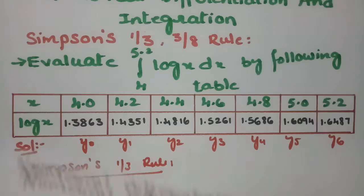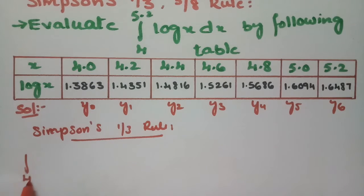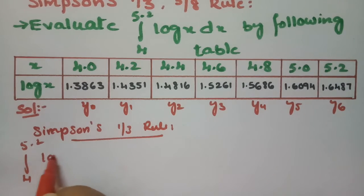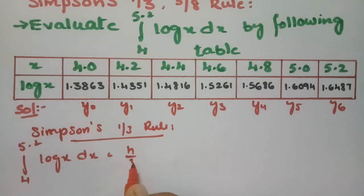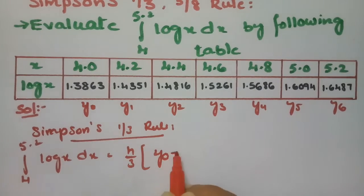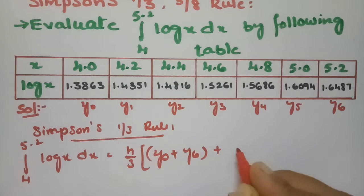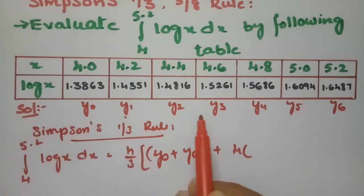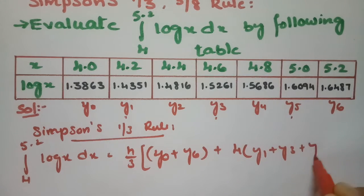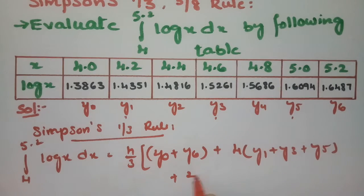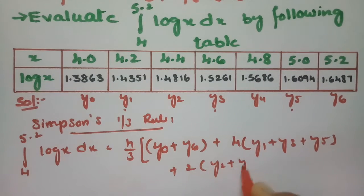Now we are going to apply these formulas. The integral from 4 to 5.2 of log x dx equals h/3 times [first ordinate plus last ordinate, plus 4 times all the odd ones — y1, y3, y5 — plus 2 times the even ordinates y2 and y4].